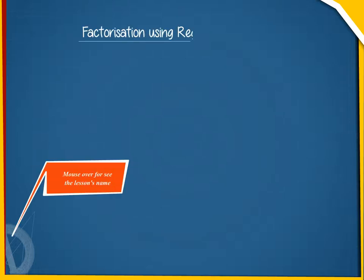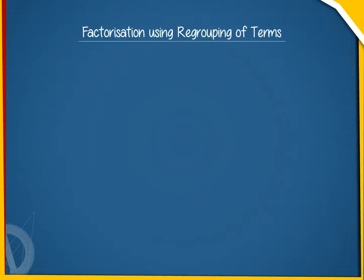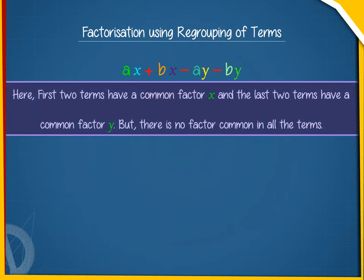Using regrouping of terms, look at the expression ax plus bx minus ay minus by. Here, the first two terms have a common factor x and the last two terms have a common factor y. But there is no factor common in all the terms.